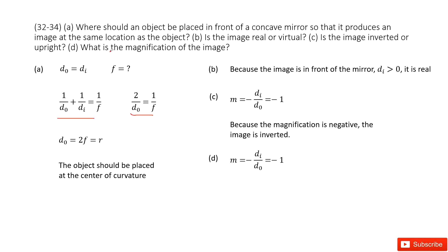The first one asks for the magnification of the image. Negative di over d0, di equals d0, so it becomes negative 1.